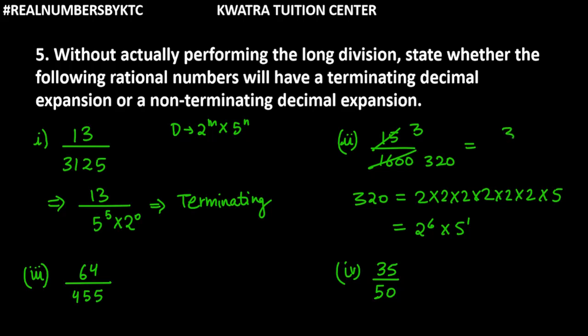We can write this as 3 over 2 raised to power 6 into 5 raised to power 1. The number is terminating again, because the denominator has the form 2 raised to power m and 5 raised to power n. Therefore, this number is terminating.